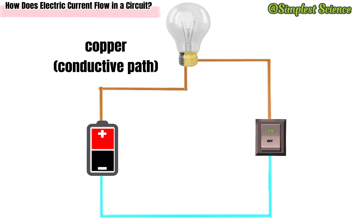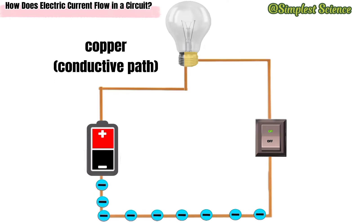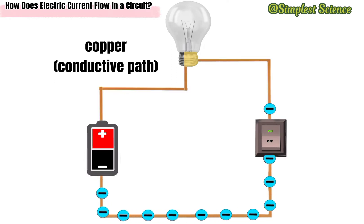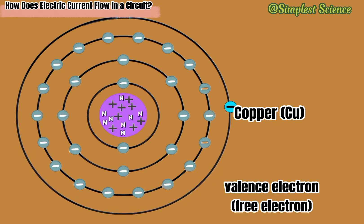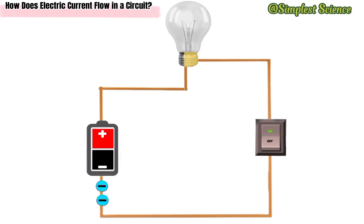The copper is the conductive path, which provides a pathway for electricity to pass through it with greater ease. Metals are known for their electron mobility, due to their loosely bound electrons in the outer shell surrounding the nucleus. These loose electrons, with the aid of the voltage, will move around the circuit to produce current.